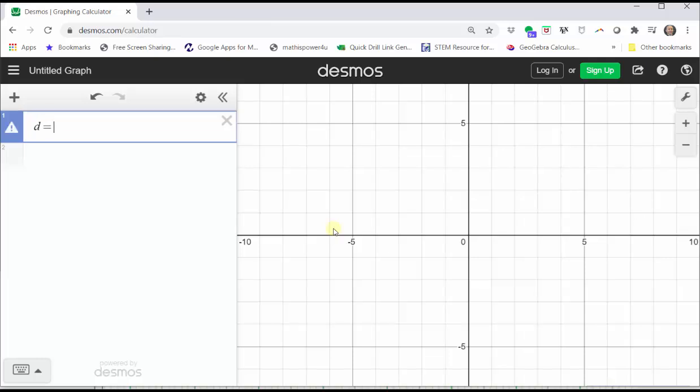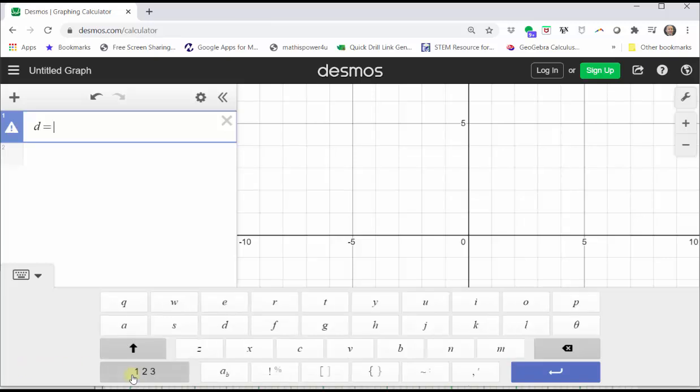To enter the test scores one by one, we must use square brackets, which can be found on the Desmos keypad by clicking the Show Keypad button, the ABC button, and the square brackets are here at the bottom.